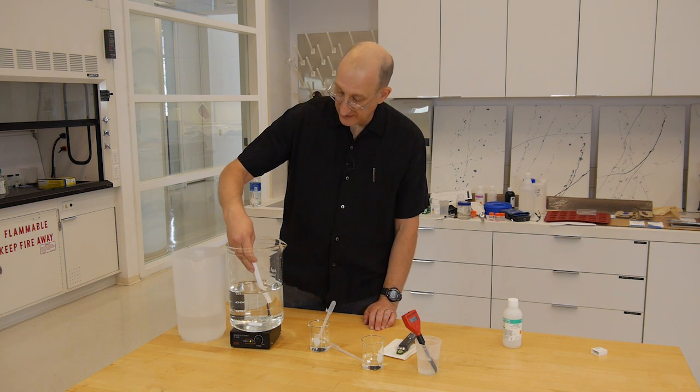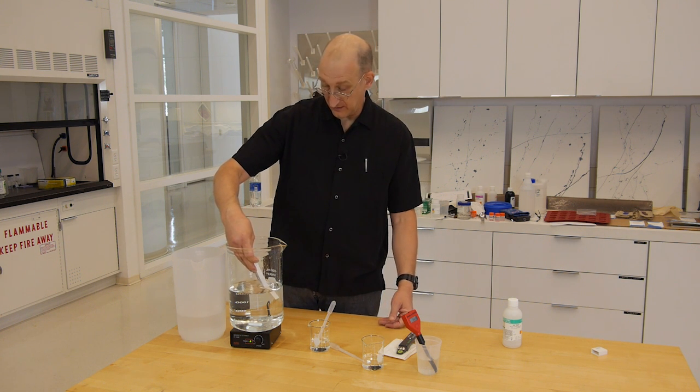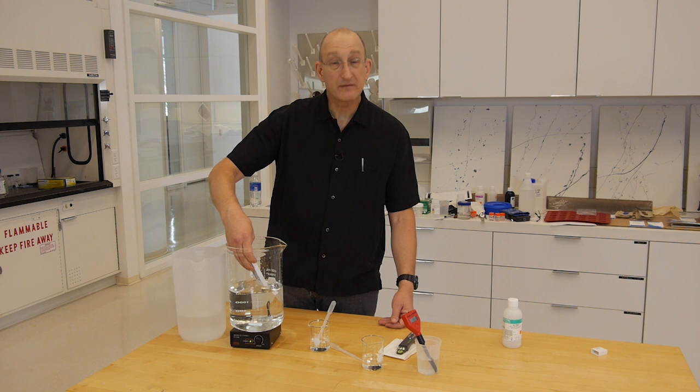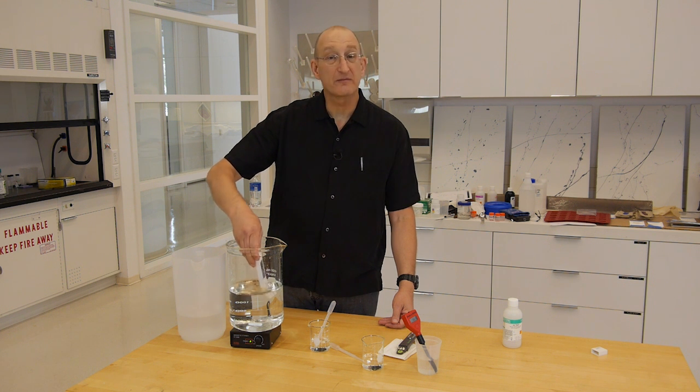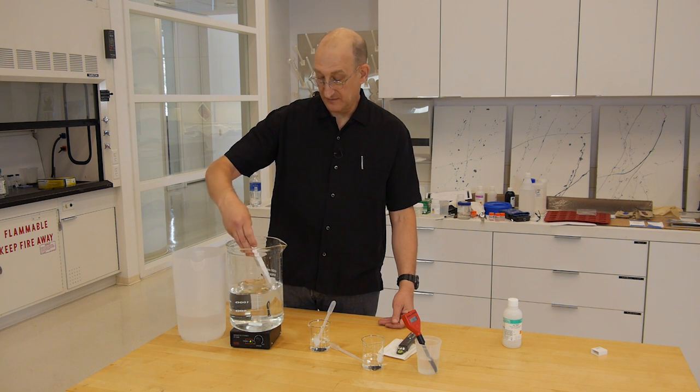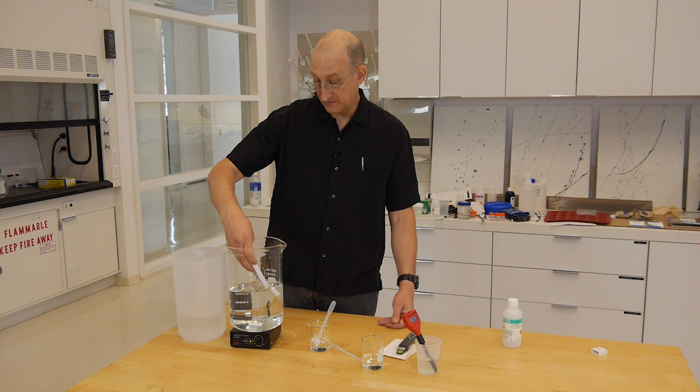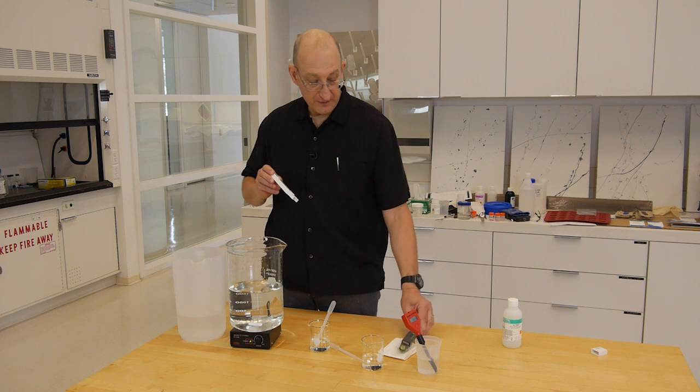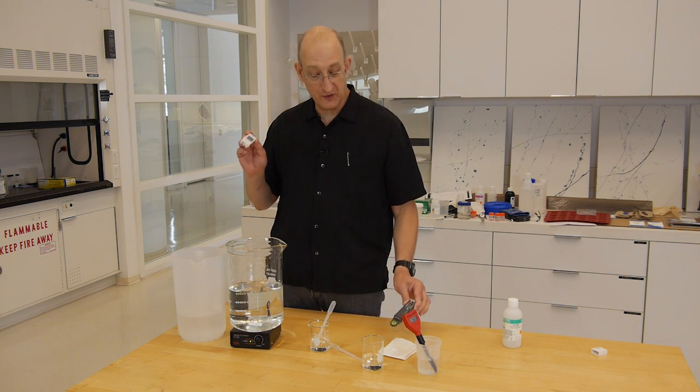And same idea, we put that in, we calibrate, and we get a reading in this case of 5.8, 5,800 microsiemens, which is again close enough to what we got with the other meter. This meter is probably better. This is a whole lot cheaper.